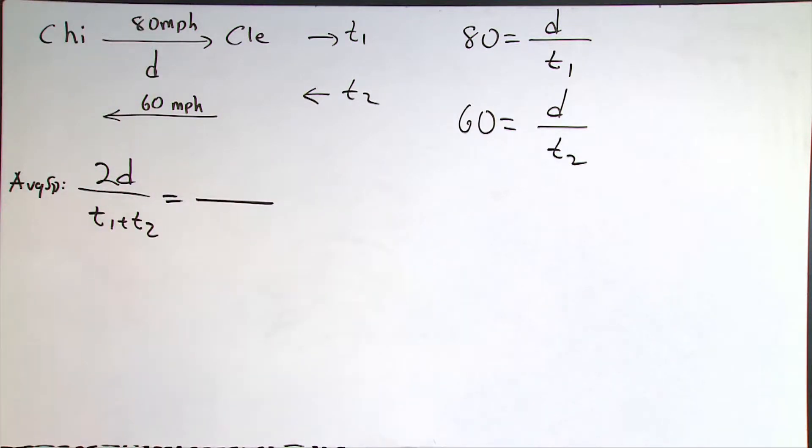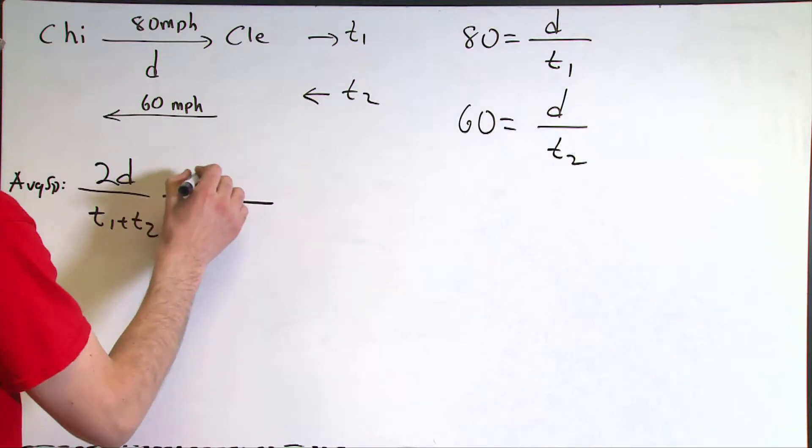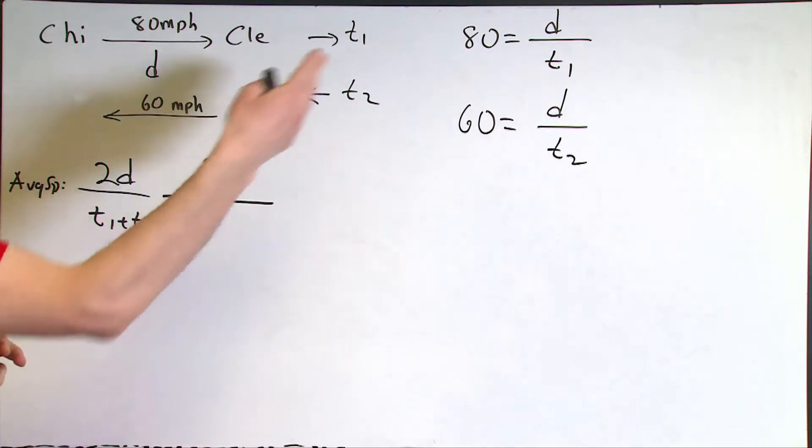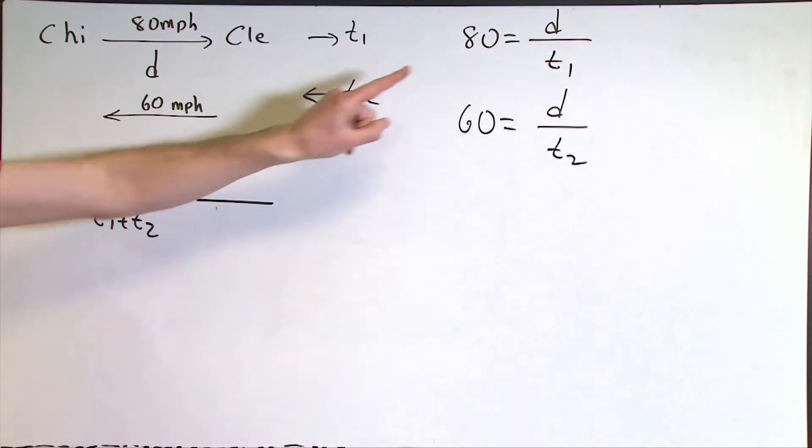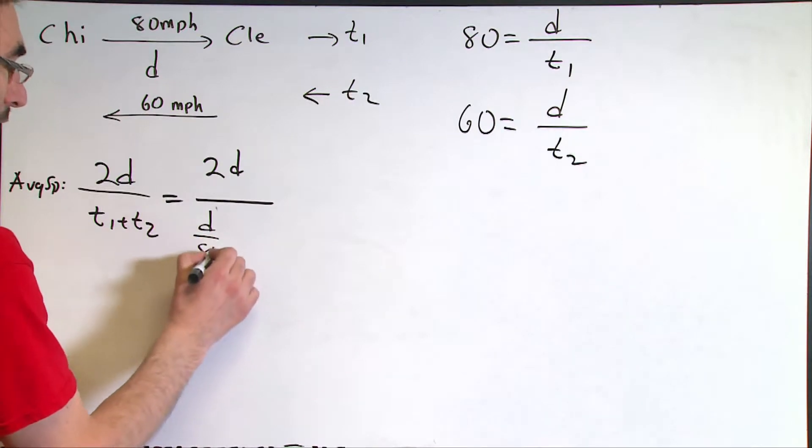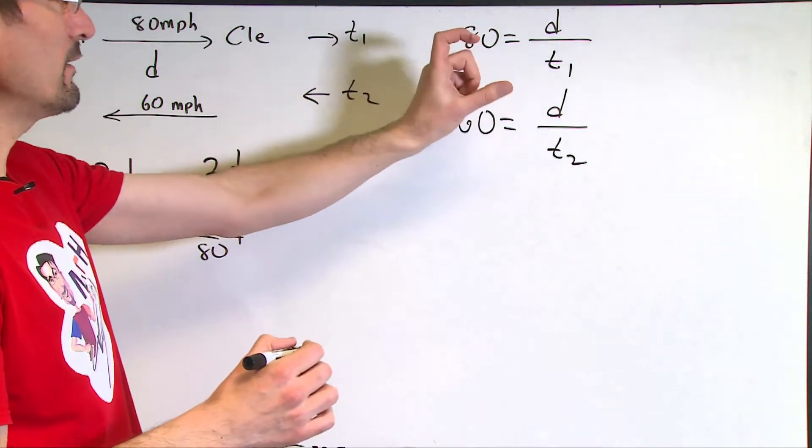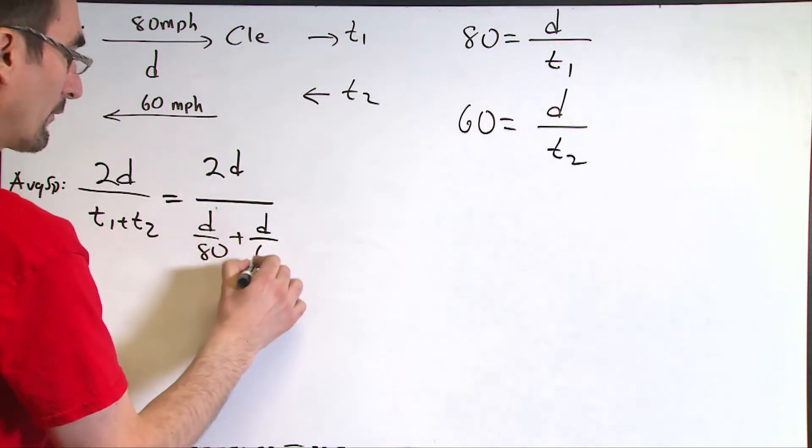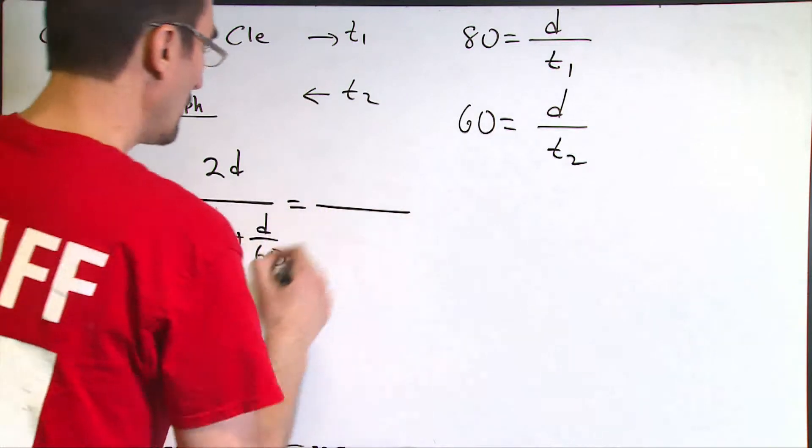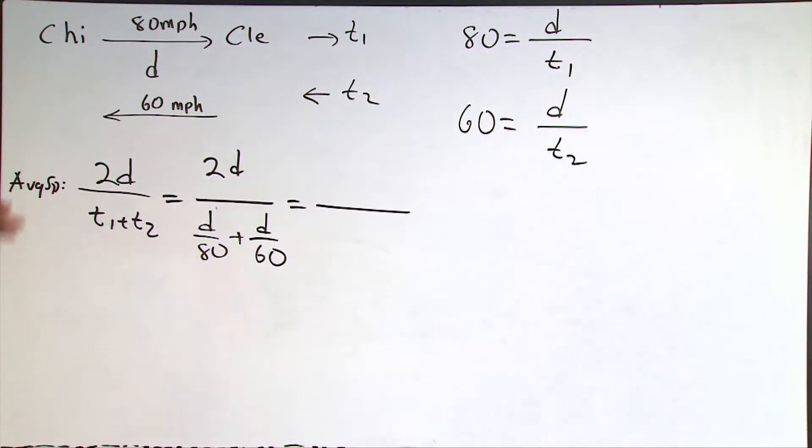Alright, so the question remains to find T1 and T2 in terms of D, and then maybe somewhere I'll be able to cancel out the D's, right? So let me replace this T1 and T2 by its equations here, D over T1. Replace T1 by D over 80. I can switch 80 and T1 over here. In the same way, I'm going to replace T2 by D over 60.